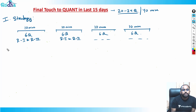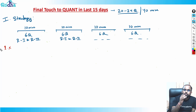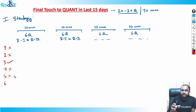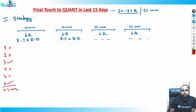For example, you open the quant paper. First question is a big geometry question — skip it. Second question is a five-line arithmetic question — skip it. Third question looks like a single-line numbers question on a familiar concept — solve it. Fourth question is a lengthy arithmetic question — leave it. Fifth is complex algebra — leave it. Sixth is a simple, familiar algebra question — solve it. So in the first four or five minutes, you've solved about two questions.